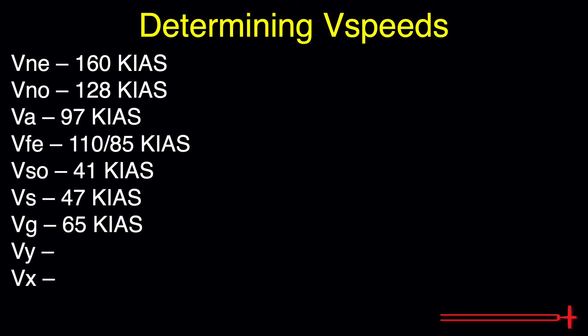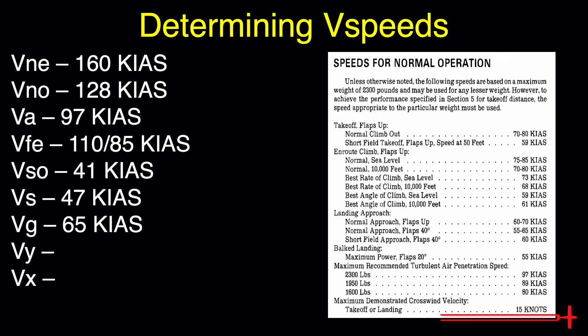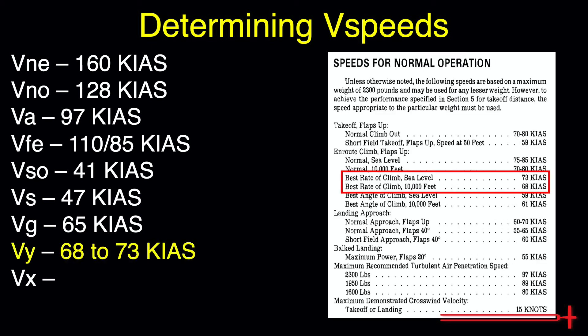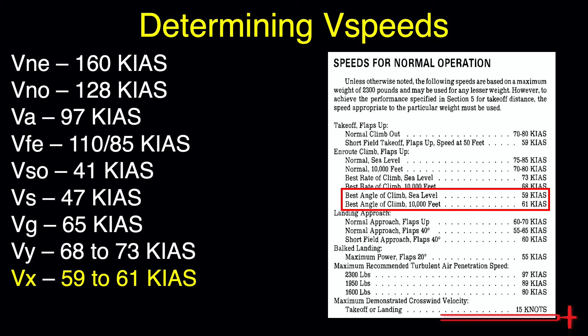We will find the remainder of our V-speeds in section 4, in the speeds for normal operation table. Once there, we can find our VY, or best rate of climb, of 68 to 73 knots, decreasing in value as we climb. The best rate of climb speed results in the greatest increase in altitude per unit time. We can also find our VX, or best angle of climb, of 59 to 61 knots, giving us the greatest increase in altitude per unit distance traveled. VY is what we aim for when told to expedite our climb to 11,000 feet, and VX is what we aim for during short field takeoffs to clear obstacles at the end of the runway.